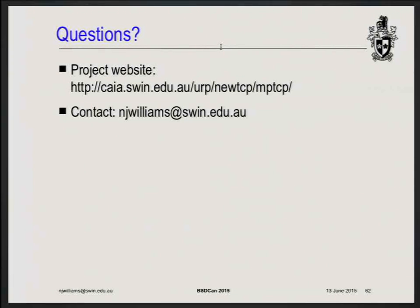Generally the client connects in first. If you consider many clients being behind NAT, the server can't really connect back to them, so the client connects to the server and if it has another address it'll join that in as well. The server can also advertise that it has other addresses available.